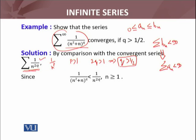We know that this series is convergent whenever q is greater than 1/2. We notice that 1 over (n² + n)^q is less than 1 over n^(2q). This is because n² + n is greater than n^(2q) — actually, n² + n is greater than n^(2q) whenever n is greater than or equal to 1. If n is not present, equality would hold.